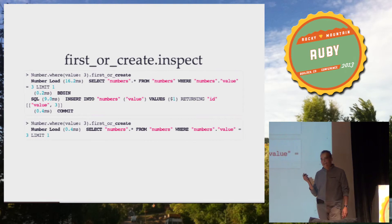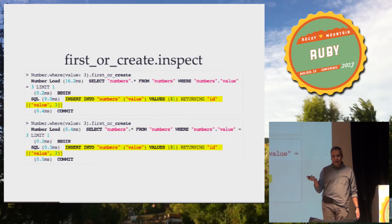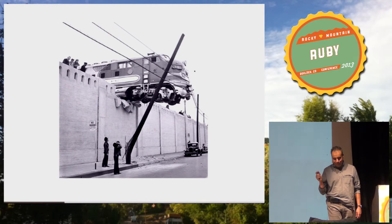But in a concurrent environment, these processes can come in slightly different order. First process checks, second process checks, first process decides it needs to create, second process also decides it needs to create — and we get our problem.